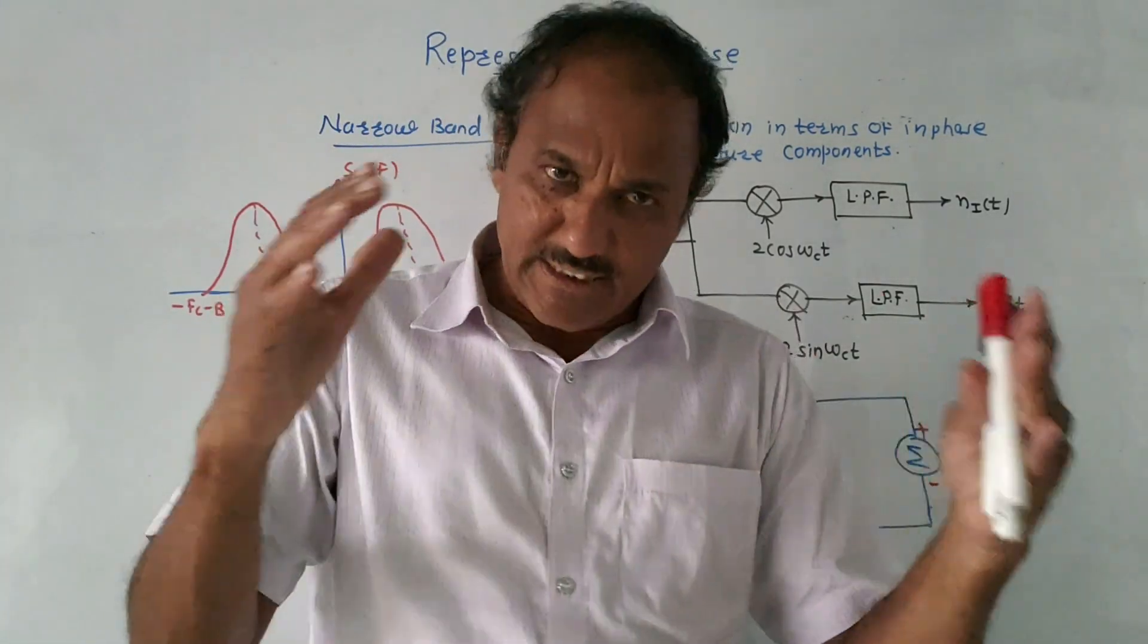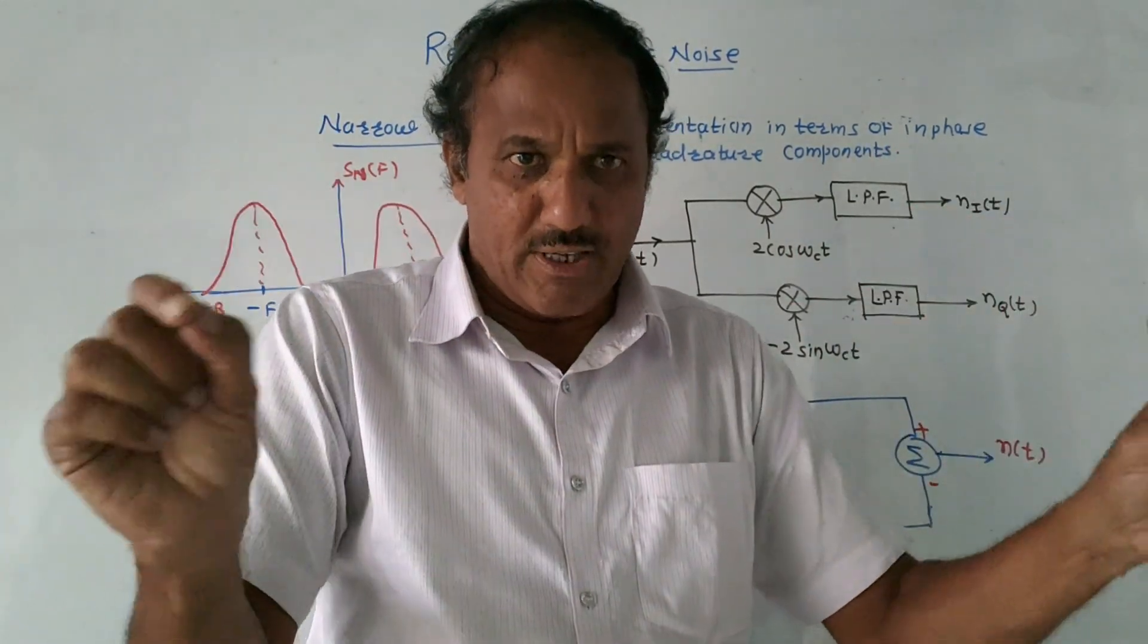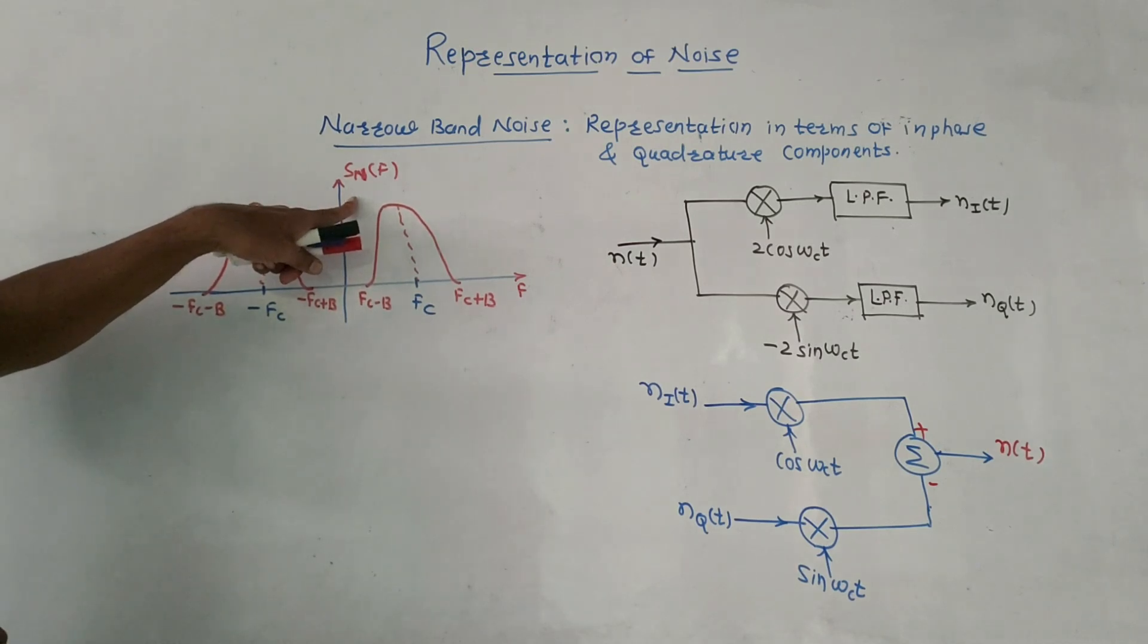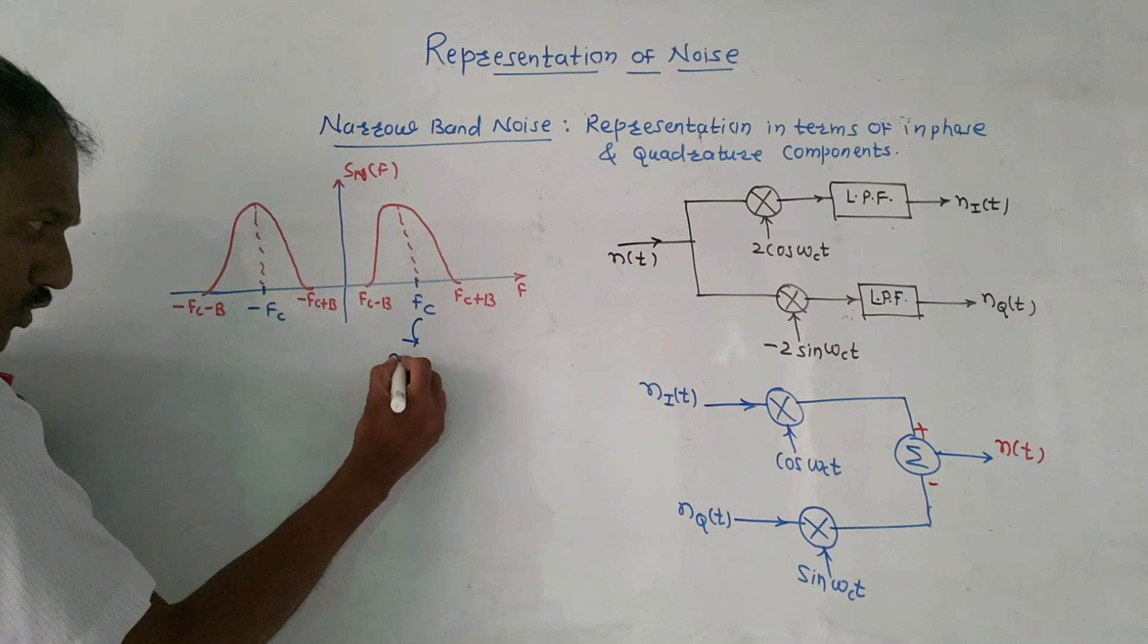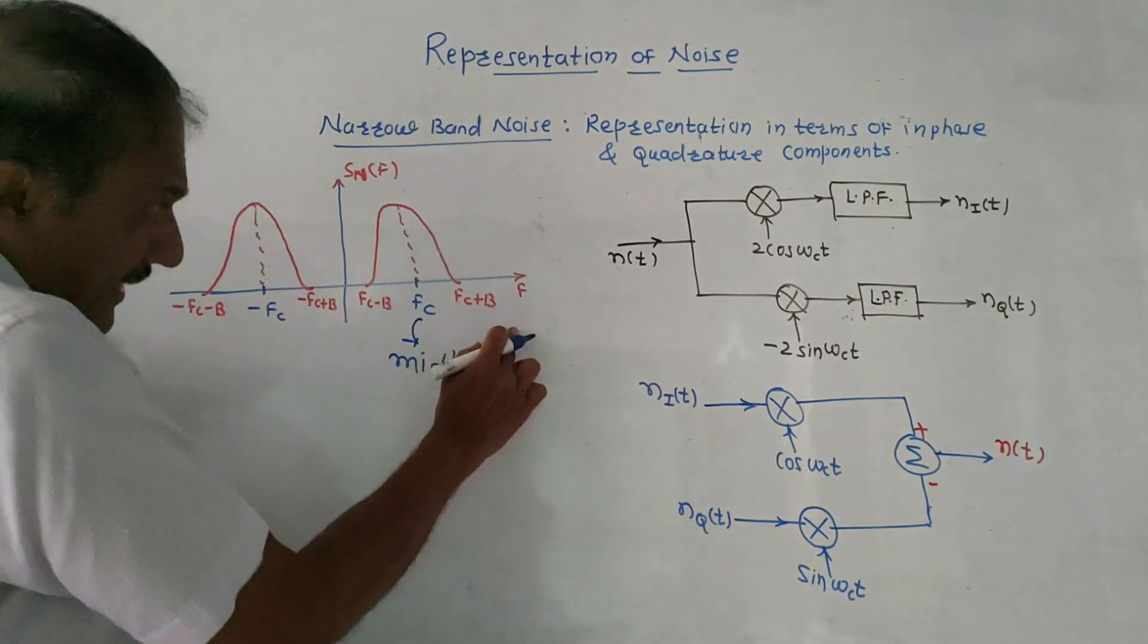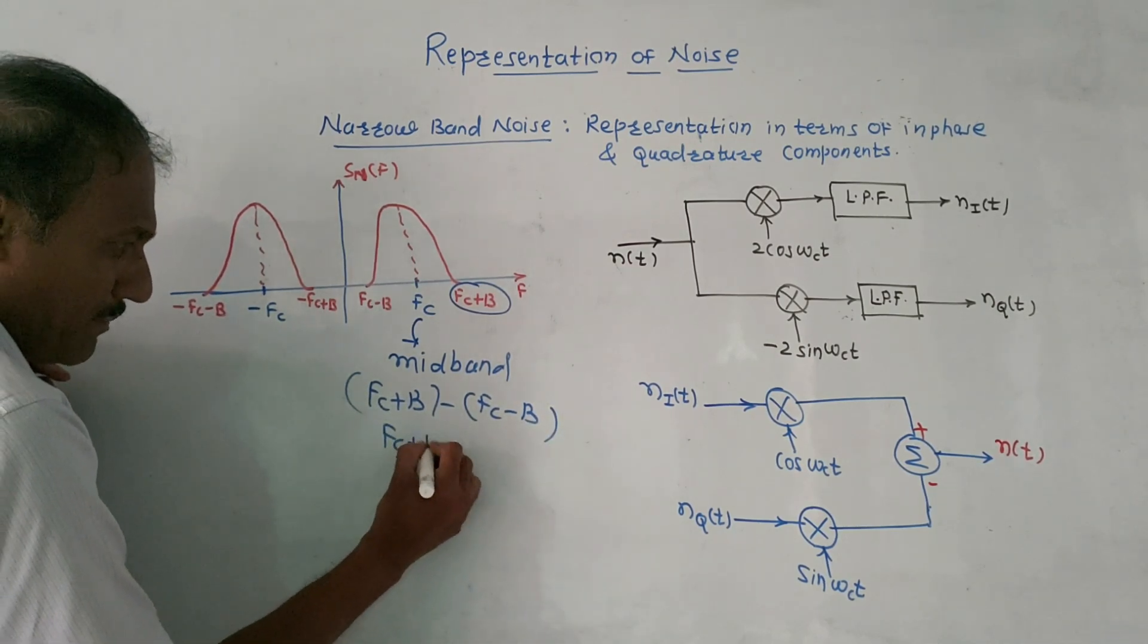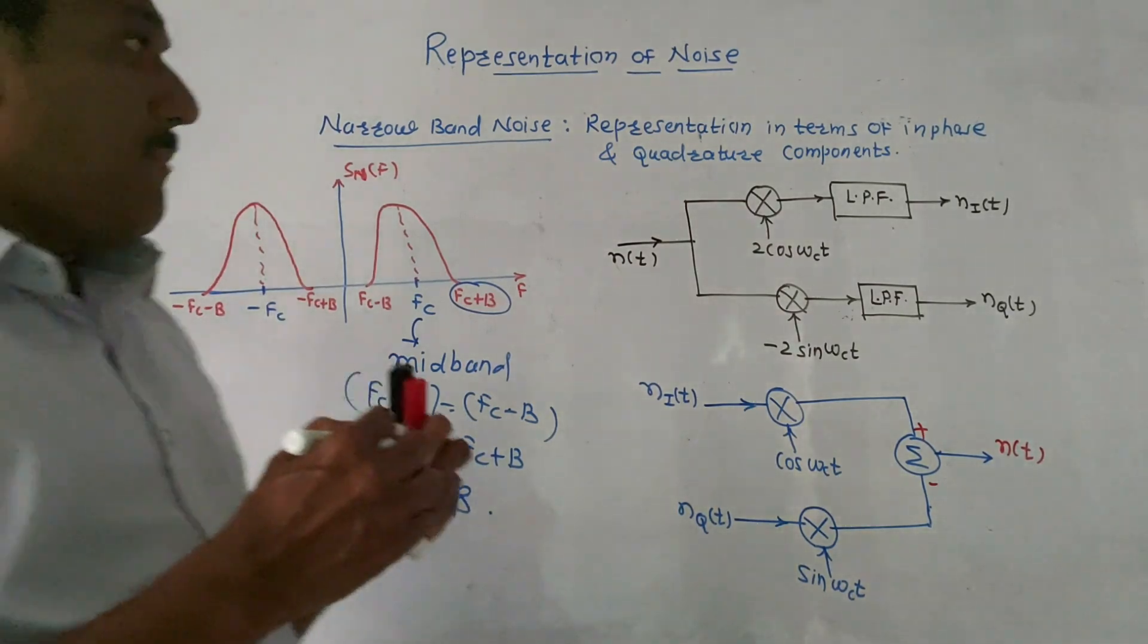Narrow band noise concept. This is the diagram of PSD of narrow band noise, which is centered at frequency fc. FC minus B to FC plus B - so bandwidth will be 2B. This is the bandwidth.